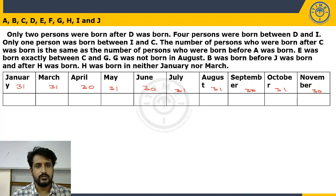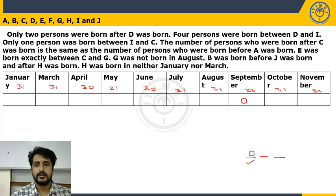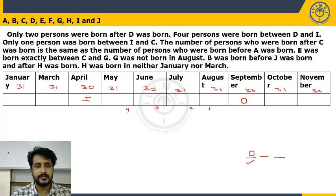First clue: only two persons were born after D was born. So after D, only two persons remain, meaning D was born in the month of September — we can freeze D there. Second clue: four persons were born between D and I. Since after D there are only two positions, I must be before D. Counting four gaps before D, I was born in the month of April. Third clue: only one person was born between I and C. This leads to two possibilities — C could be in January (before I) or in June (after I).